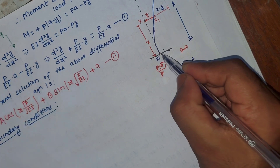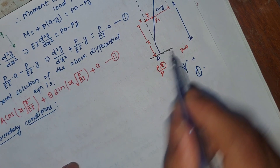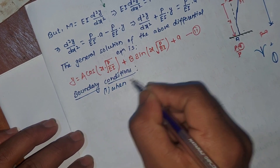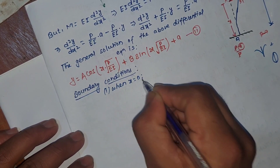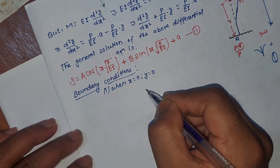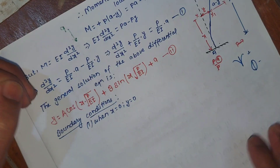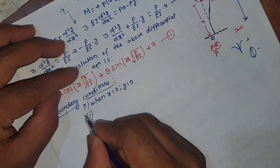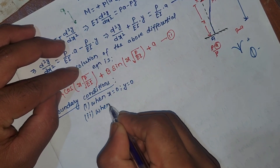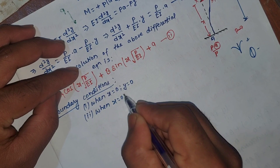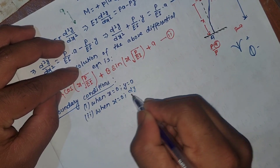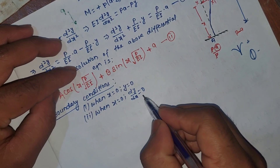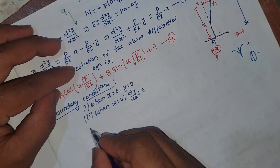Now we apply the boundary conditions. Boundary condition 1: when x is equal to 0, then y is also equal to 0. Boundary condition 2: since end A is fixed, when x is equal to 0, then dy/dx is also equal to 0. Boundary condition 3: when x is equal to L, y is equal to a.